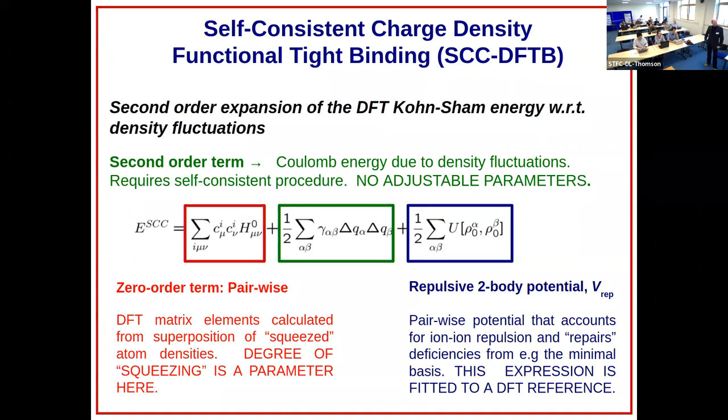So essentially the parameters primarily in that first term, the first term which is coupled to the second term, the self-consistent term. We looked carefully at those, and what is left, the far right, is this repulsive energy term that's supposed to correct the energy.